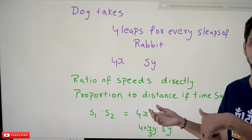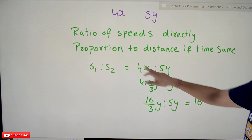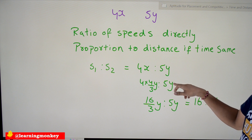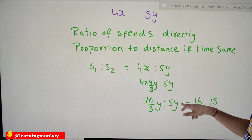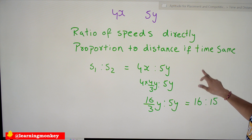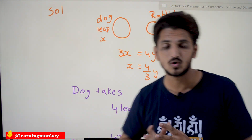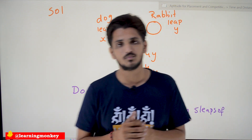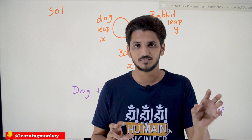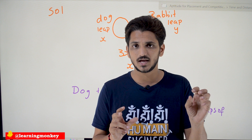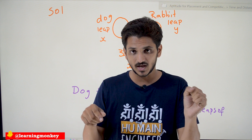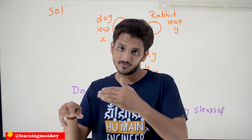Since time is the same, to find the ratio of speeds we use the ratio of distances: 4x : 5y. Substituting x = (4/3)y: 4 × (4/3)y : 5y = (16/3)y : 5y = 16 : 15. So the ratio of speeds of dog to rabbit is 16:15.